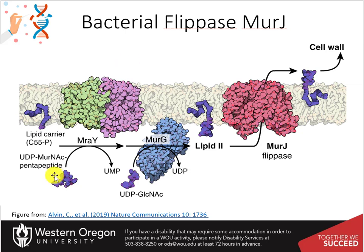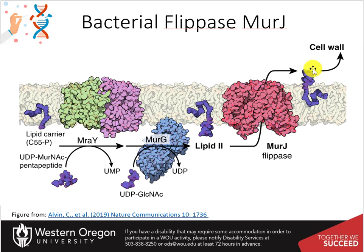The UDP-activated peptidoglycan moiety, MurNAc pentapeptide, is covalently linked to a lipid carrier C55P by the MraY and MurG enzymes to form lipid II. The cytoplasmic-facing lipid II is flipped to the periplasmic side of the membrane by a lipid II flipase. After which, the GlcNAc-MurNAc pentapeptide moiety is released and incorporated into the peptidoglycan layer. The lipid carrier is then flipped back to the cytoplasmic side and recycled.